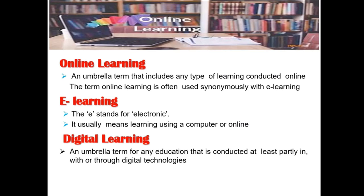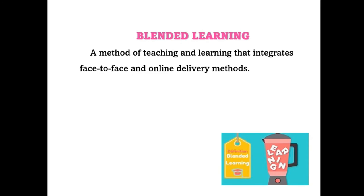Online learning is an umbrella term that includes any type of learning conducted online, often used synonymously with e-learning. The 'e' in e-learning stands for electronic, usually meaning learning using a computer or online. Digital learning is an umbrella term for any education that is conducted at least partly online, in, with or through digital technologies. Blended learning is a method of teaching and learning that integrates face-to-face and online delivery methods.